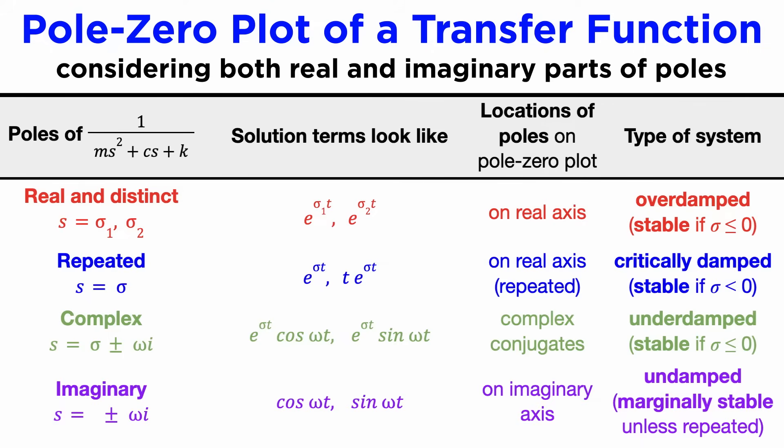Being able to deduce the general characteristics of a system from its pole-zero plot by inspection is a useful skill, especially in applied math contexts.